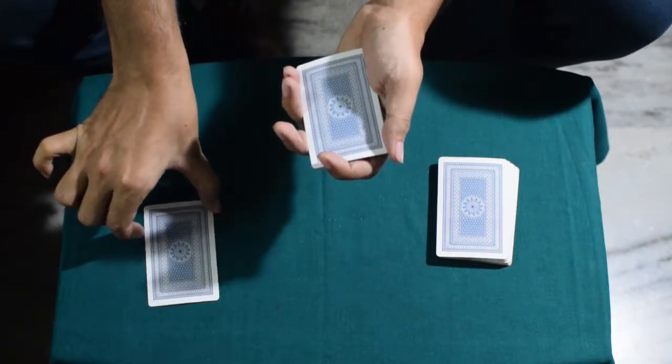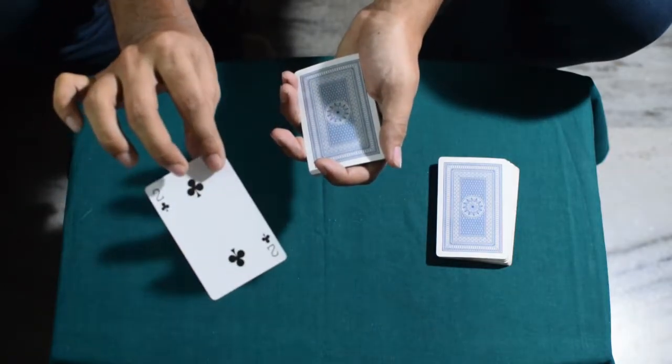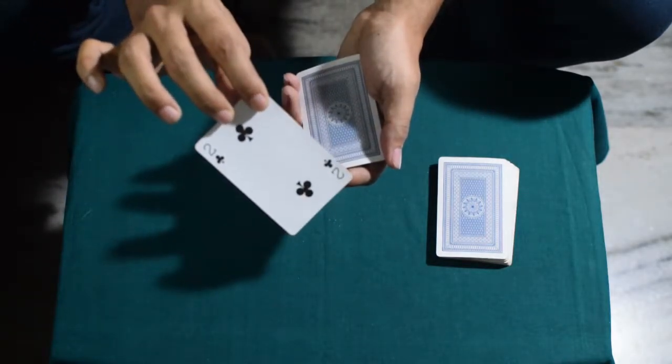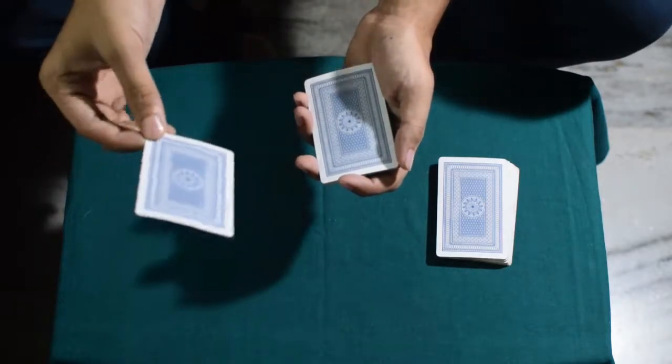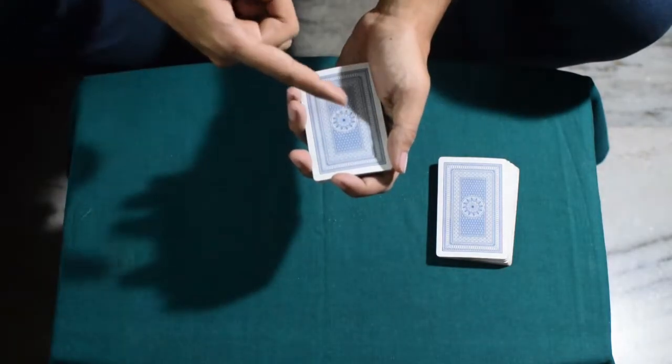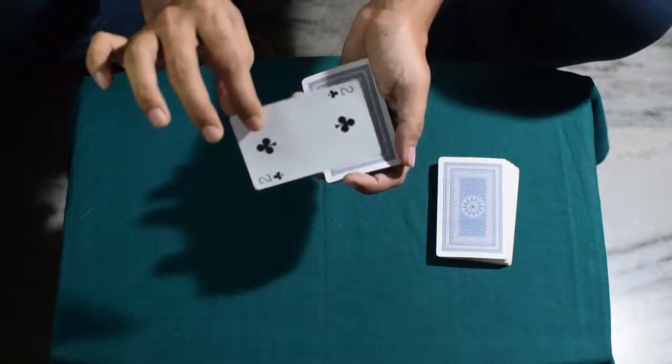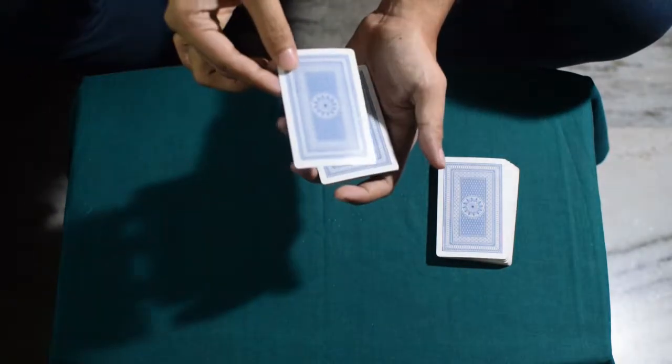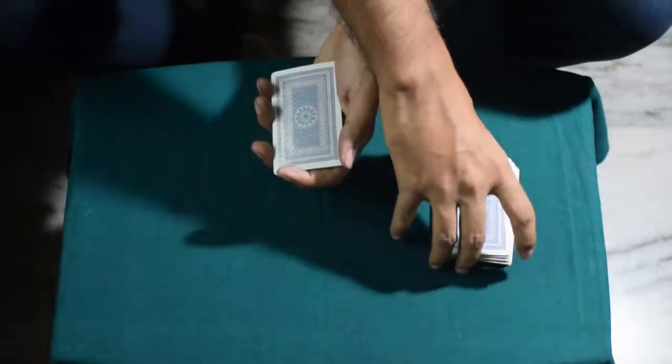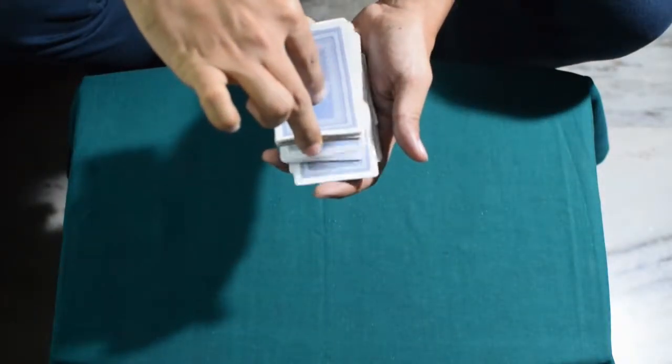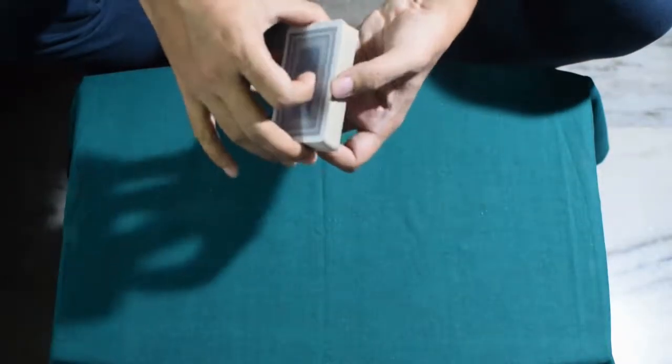You lift at your break, and the spectator will think that they said stop at the exact same position. Meanwhile, the spectator can look at the card. In this case, it's the Deuce of Clubs. You place the selected card of the spectator on top of your packet of 11 cards. So now the spectator's card is the 12th card from the top, and then you riffle the rest of the cards on top of the spectator's card.